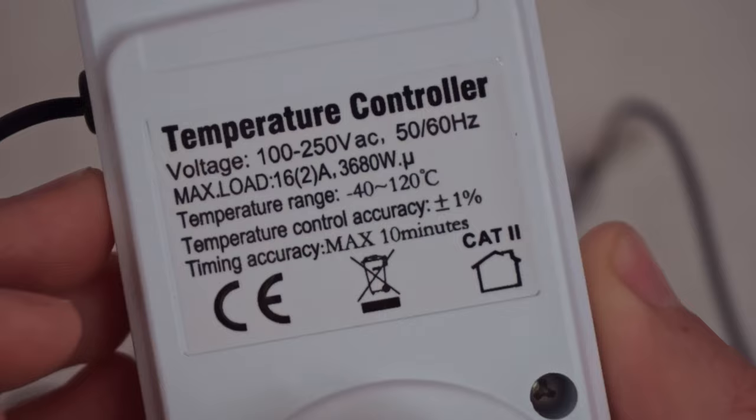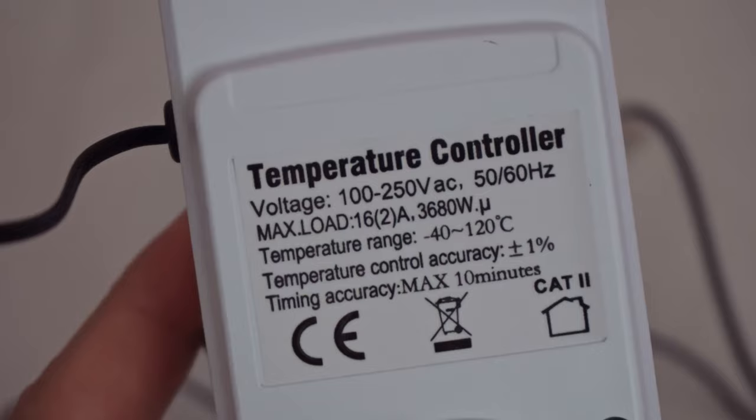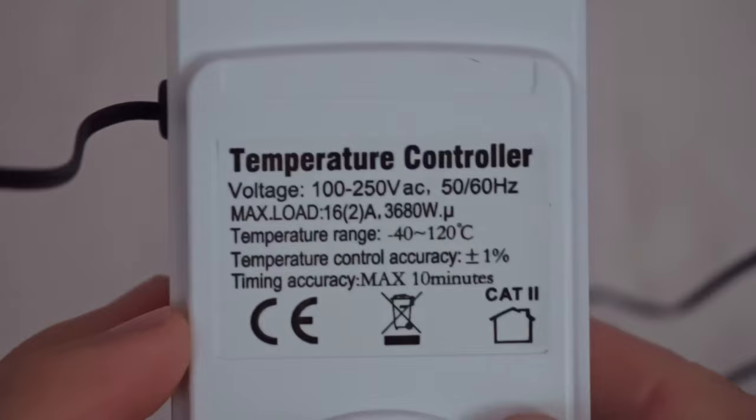It says temperature controller for voltages between 100 and 250 volts AC, European frequency and US frequency. Maximum load is 3600 watts. Temperature range is minus 40 degrees Celsius to 120 degrees Celsius. That is for the sensor. Accuracy plus minus 1%.